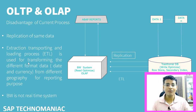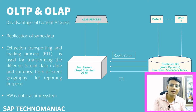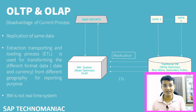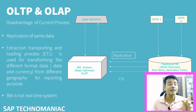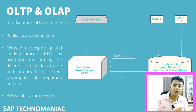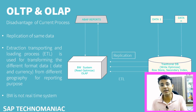But from HANA onwards, since we have a powerful processor, we put both things together — we are not replicating data from one system to another. We created one database that can be used for both analysis and transactional processing. That is the reason we say OLTP and OLAP can be done together in ABAP on SAP HANA. This is the advantage of using ABAP on SAP HANA — we don't need to store data in separate systems. Our database is powerful enough to handle complex queries as well as day-to-day transactions.